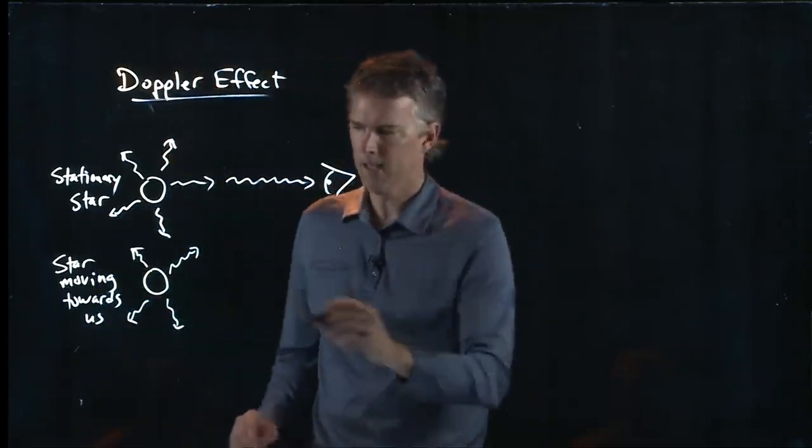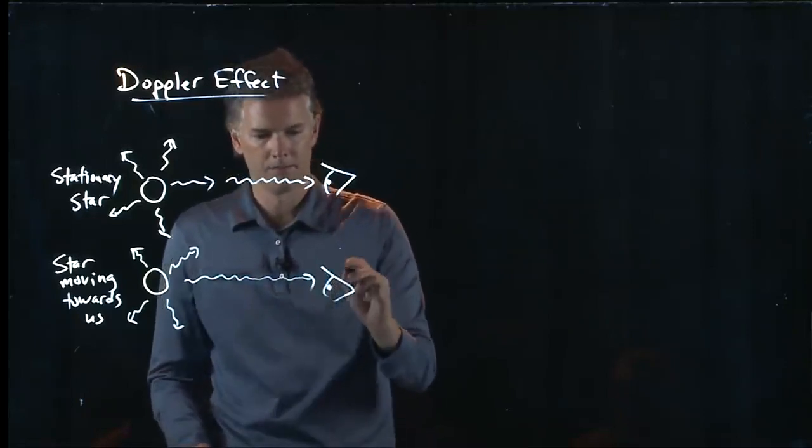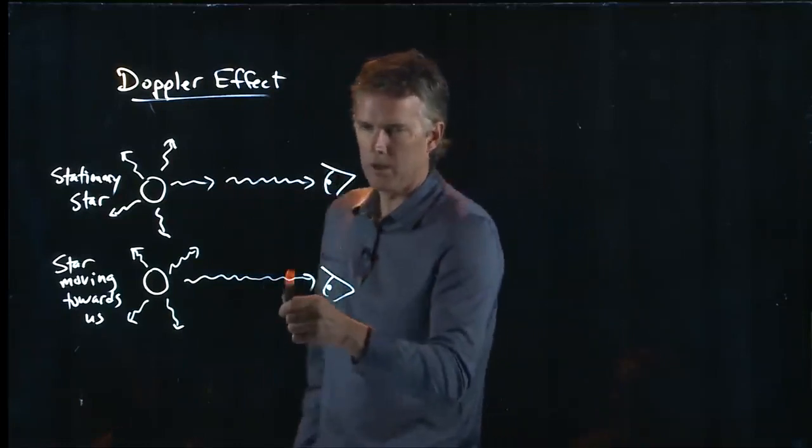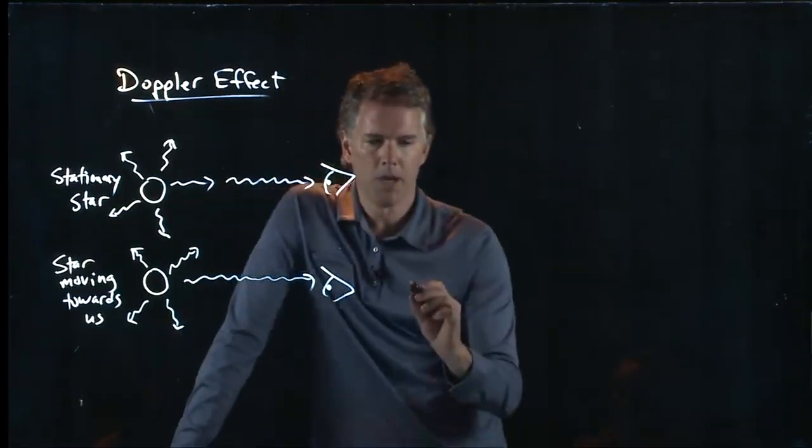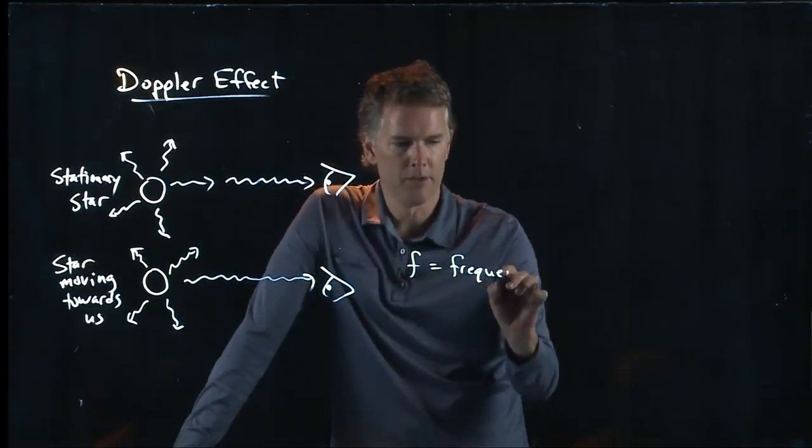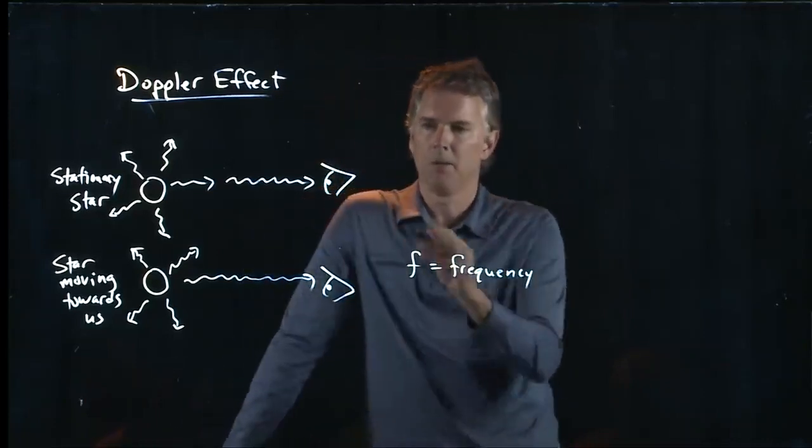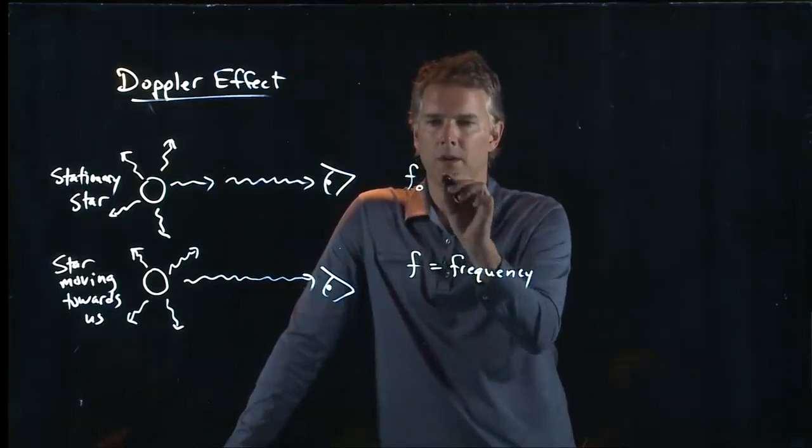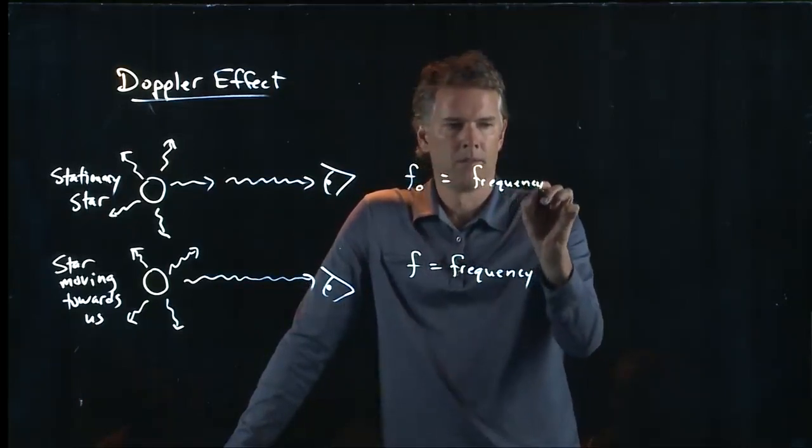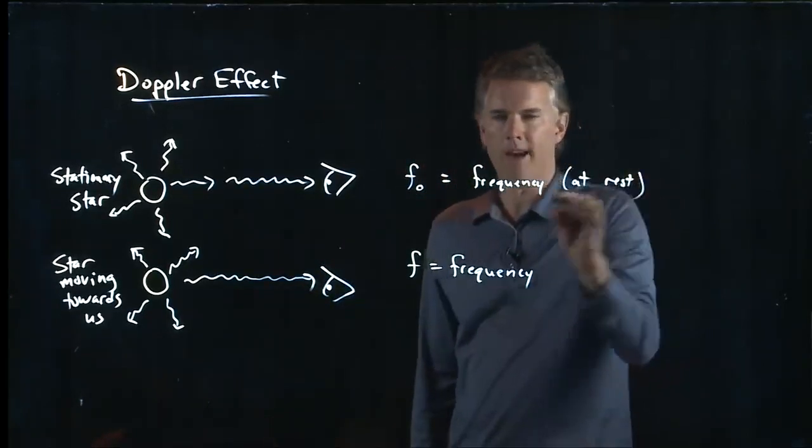It's still emitting light, and some of that light gets all the way to us. When we look at that light, we can measure the frequency. F is the frequency of that light. And let's say we did the measurement up here. We measured the frequency when it was at rest. And we call that F naught.